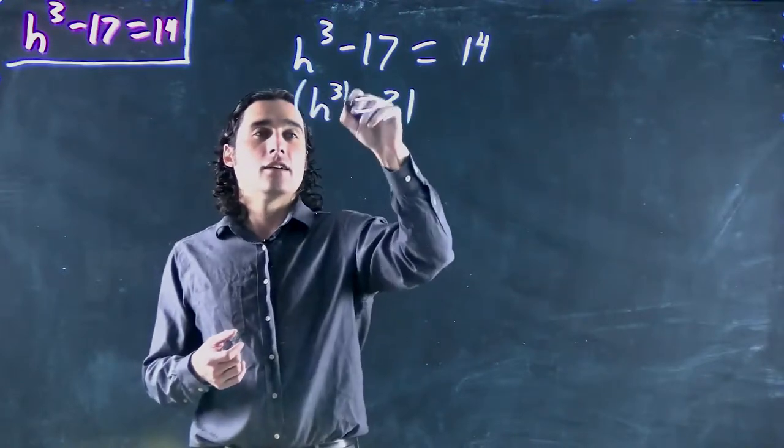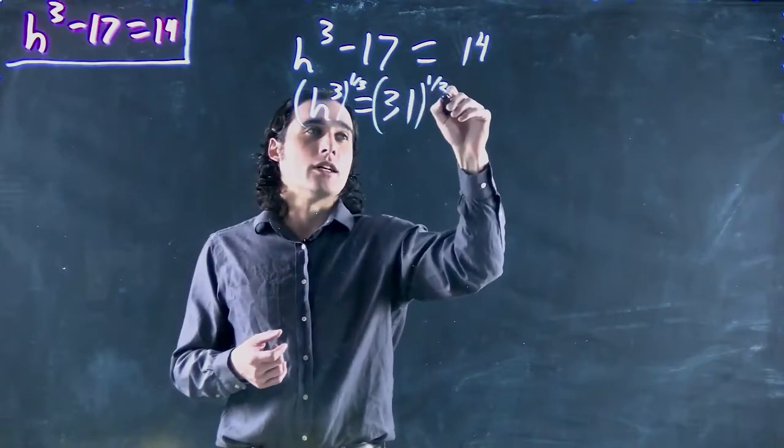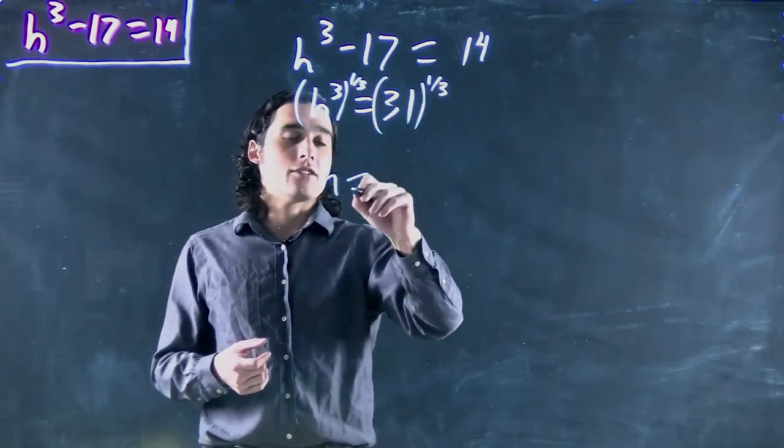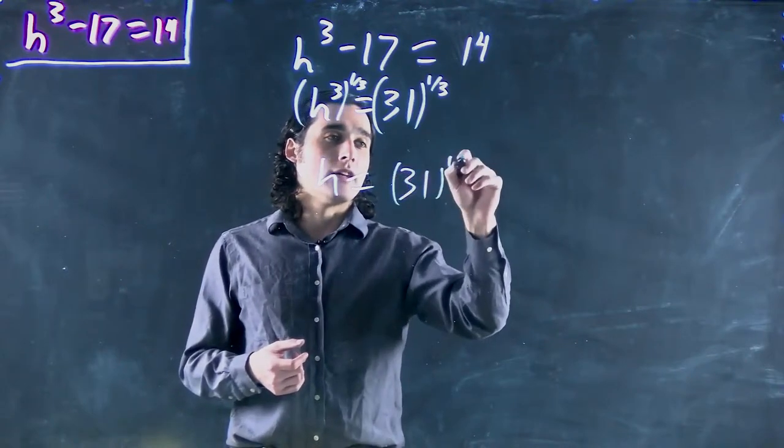And now we want to take the 1/3 power of both sides because we want to cancel out the power here and we will get h equals whatever 31 to the power of 1/3 is.